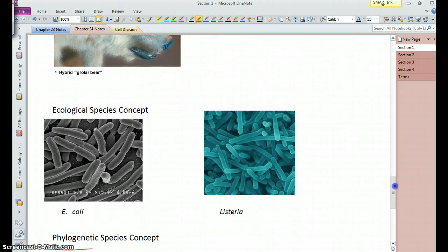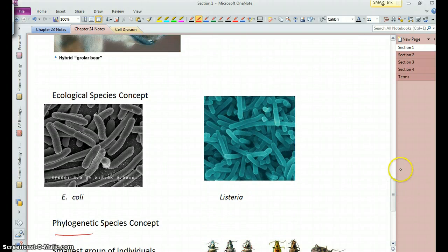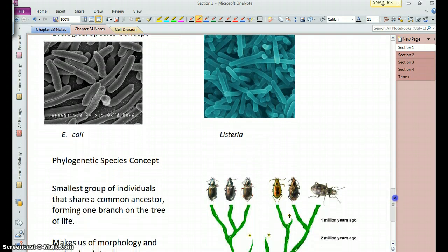Now, we also have the ecological species concept, which looks at ecological function. What do organisms do in the environment? Where do they live? And so, for example, E. coli and Listeria are both bacilli types of bacteria, and so when you look at them, you can't really tell the difference between them so much. But when we study what they do, we see that they are quite different from each other in where they live and how they function.